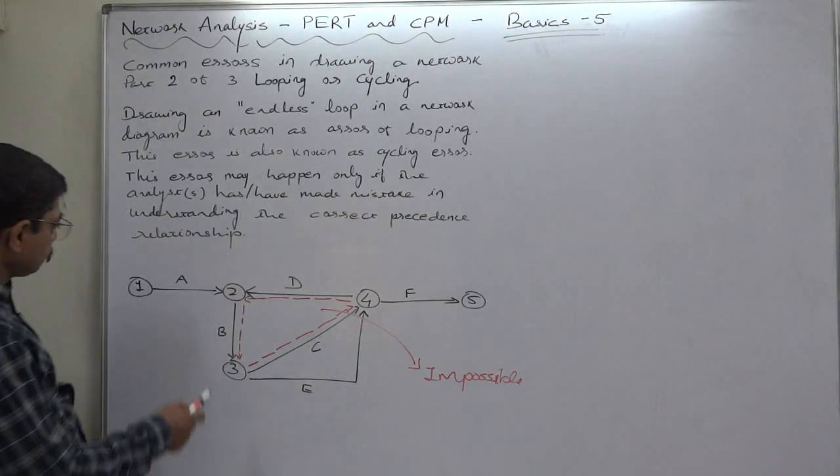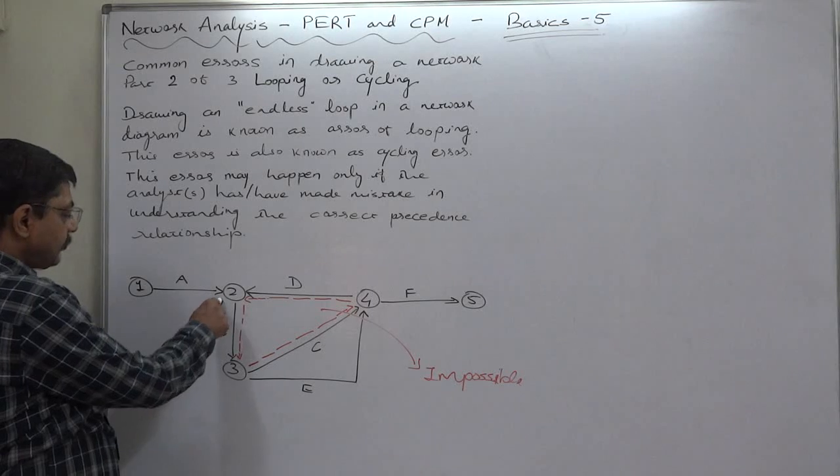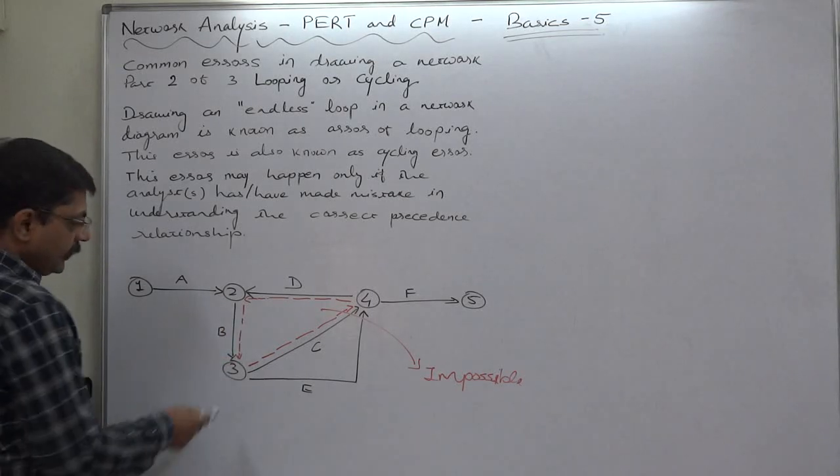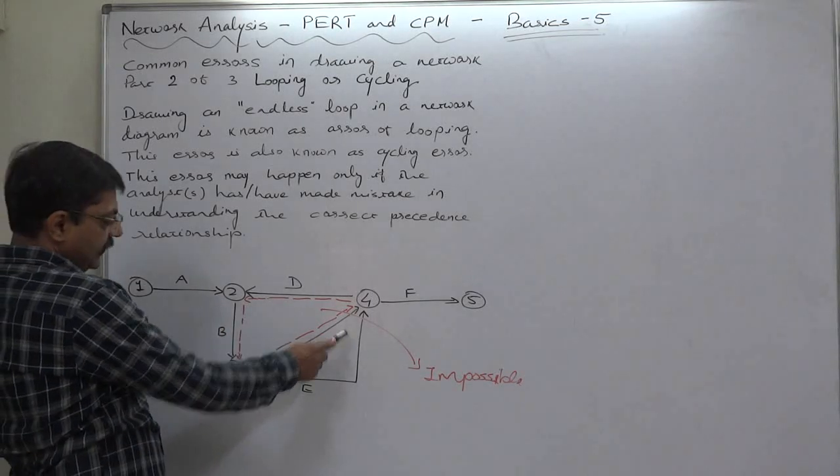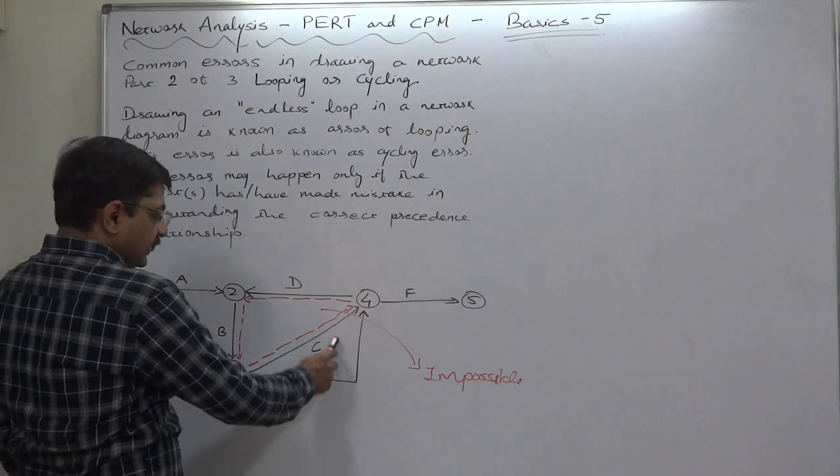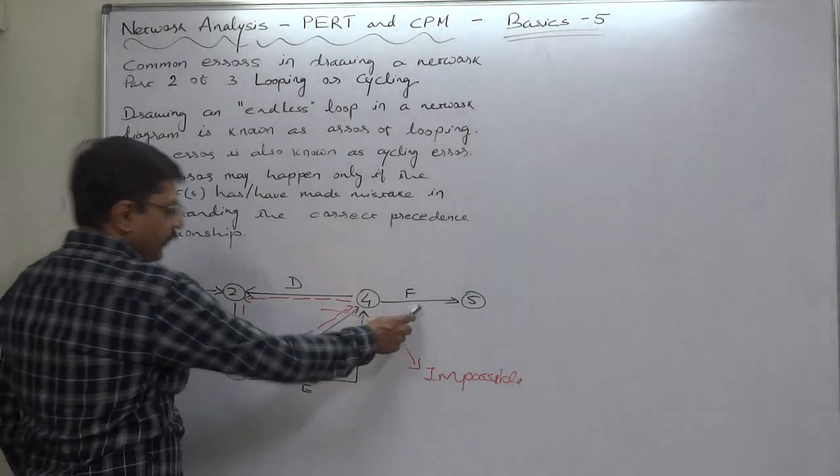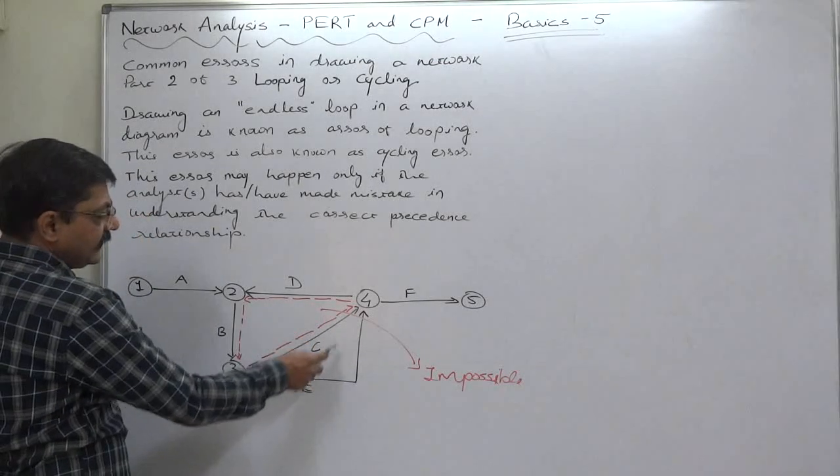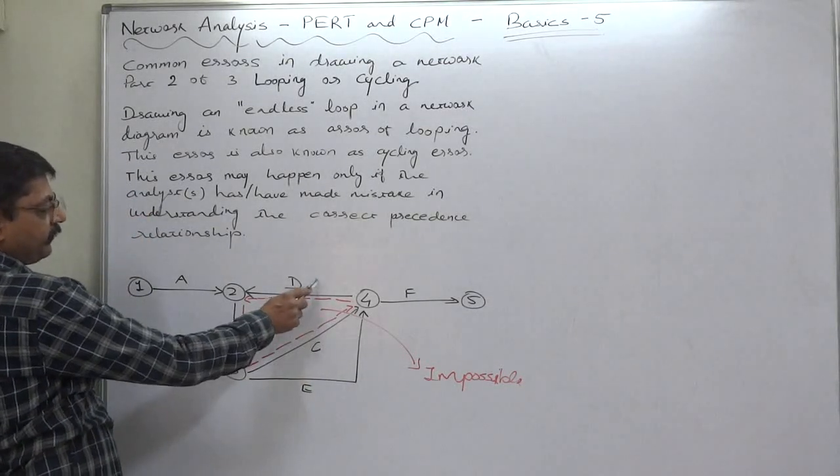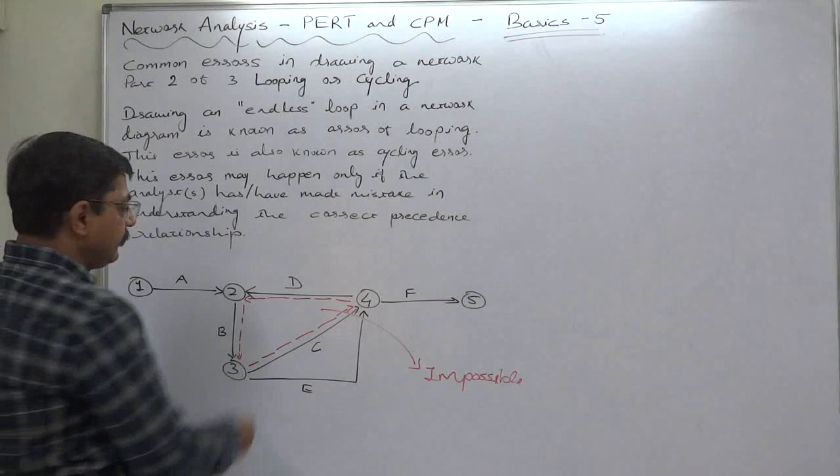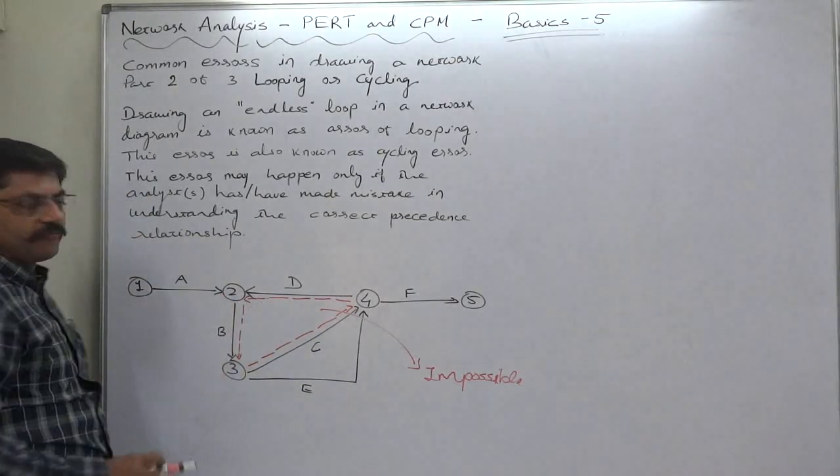In this network diagram, A is predecessor of B. B is predecessor of C as well as E. C and E are predecessor of F. But C and E are also predecessor of D. But the surprising element is D again becomes the predecessor of B.